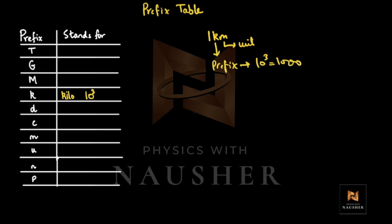Next, going up: mega is represented by capital M, and the value is 10 raised to power 6. You must memorize these. Then giga, prefix capital G, is 10 raised to power 9. Then tera is 10 raised to power 12 — think terabyte, gigabyte, megabyte.